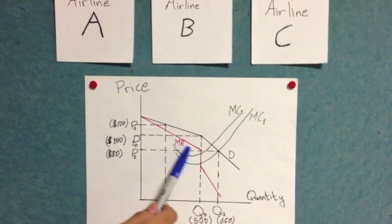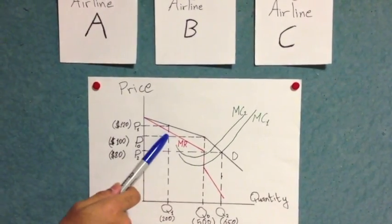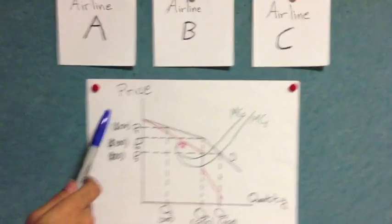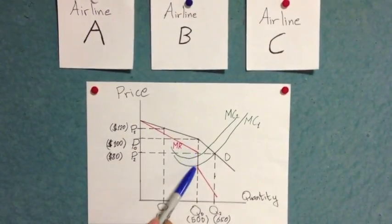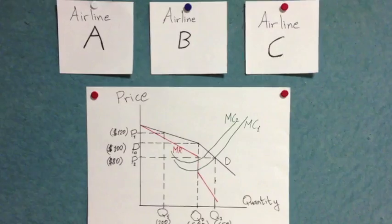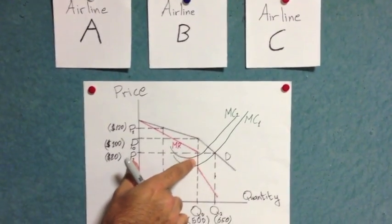As for the marginal revenue curve, which is plotted here in red, since we know it diminishes at about twice the rate of the demand curve, it would look something like this.